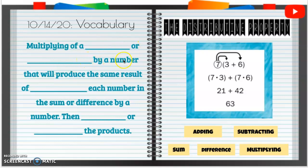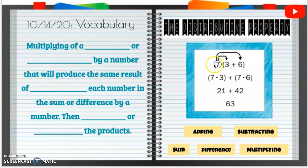The distributive property: multiplying of a sum or difference by a number that will produce the same results of multiplying each number in the sum or difference by a number, then adding or subtracting the products. Let's add in some terms to make this definition full. When you have the distributive property, you're going to take the first number and multiply it into parentheses that'll either be a sum or a difference of two numbers.